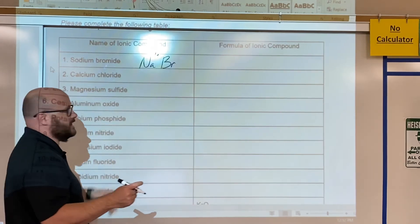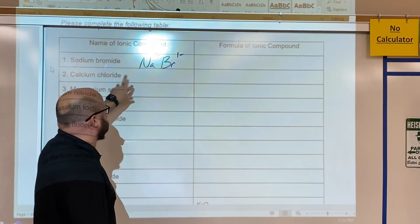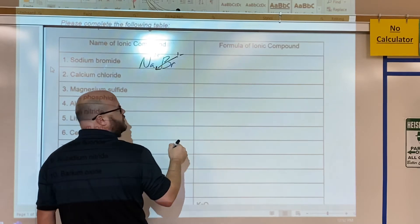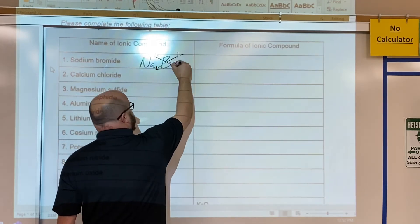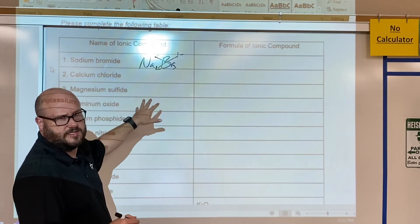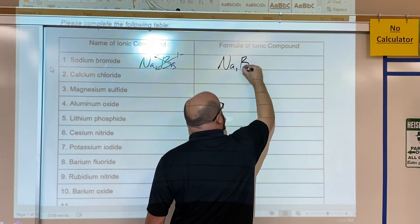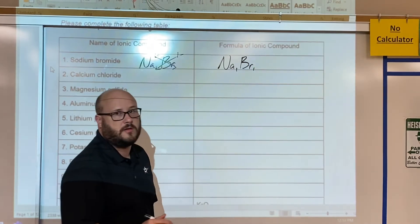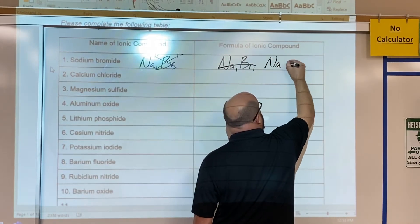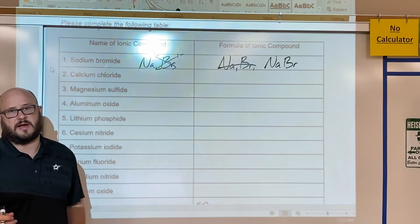Bromine is in group 7A, it's going to gain one electron and become a one minus. This is where the crisscross comes in. Crisscross applesauce - you're going to take this superscript and move it to that subscript, and then same with this. Don't worry about the charges, you don't put those as subscripts. So then you would just write your compound Na1Br1, but we know we don't technically need those ones, so we can just say NaBr. That's about as simple as it gets when it comes to a binary ionic compound.